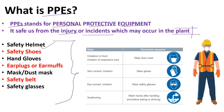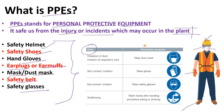Here you can see the safety helmet, which a person wears in the plant. Then safety shoes, safety gloves, safety glasses, ear plugs, mask or dust mask, safety belt — we use mainly when we work at a height — and safety glasses.